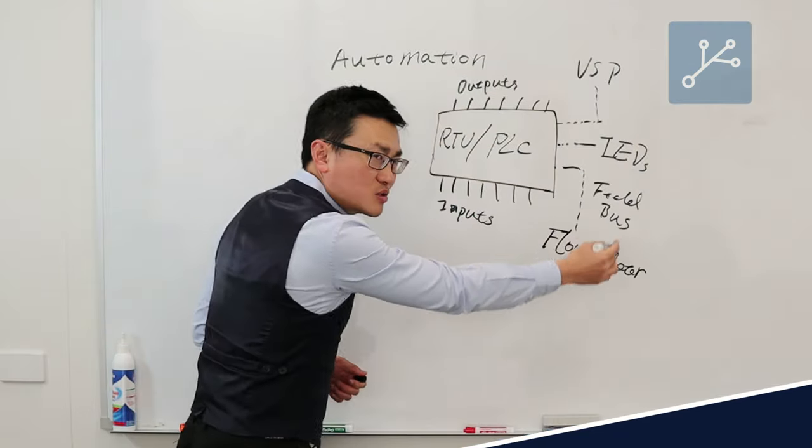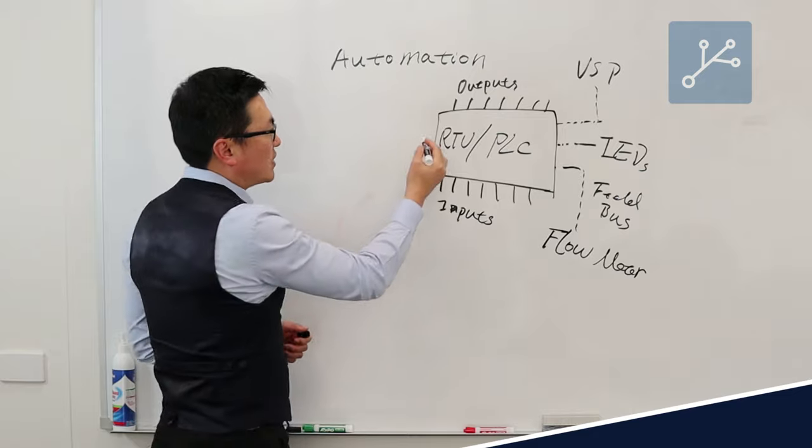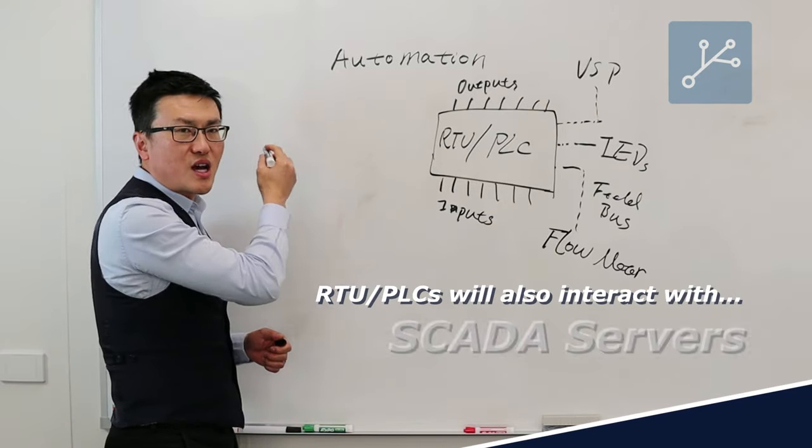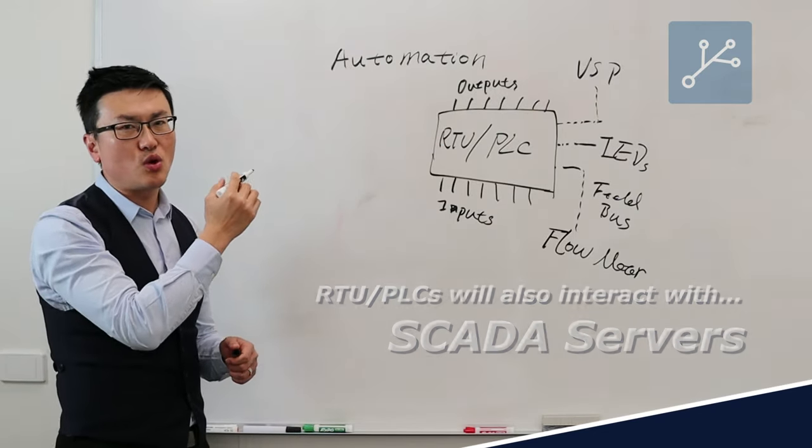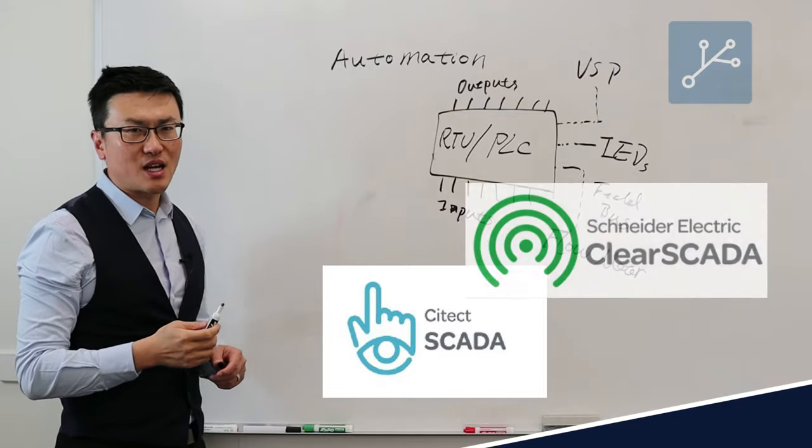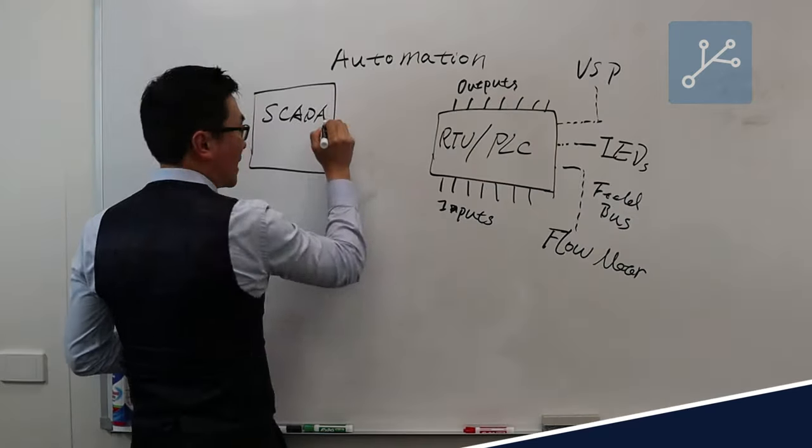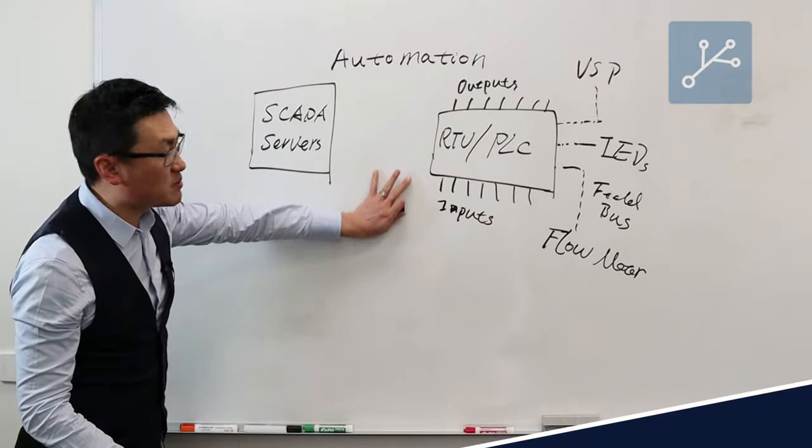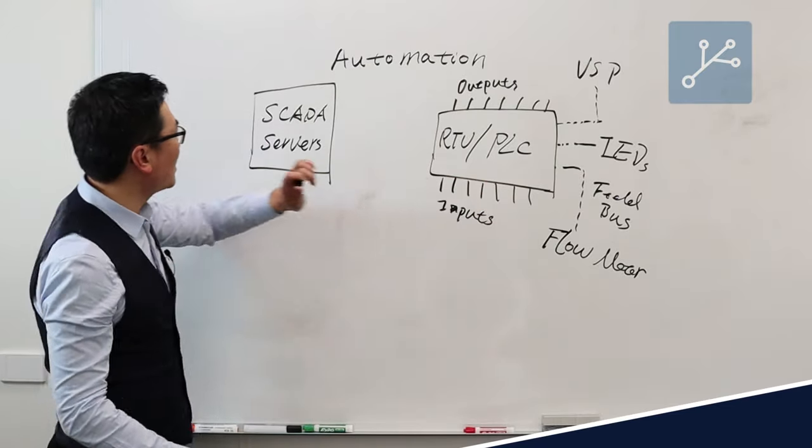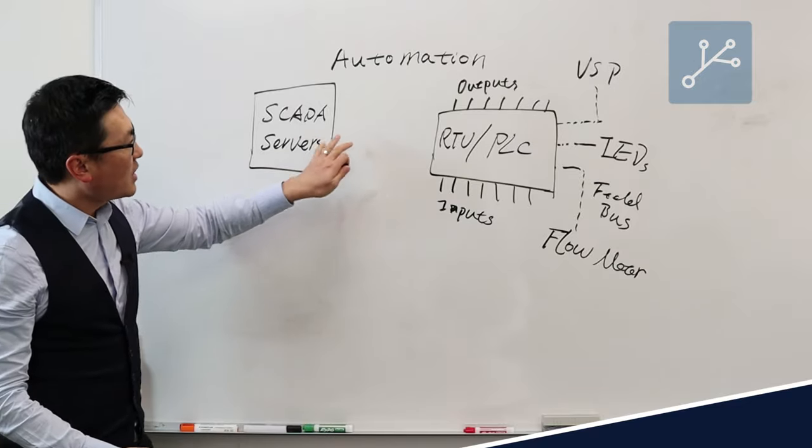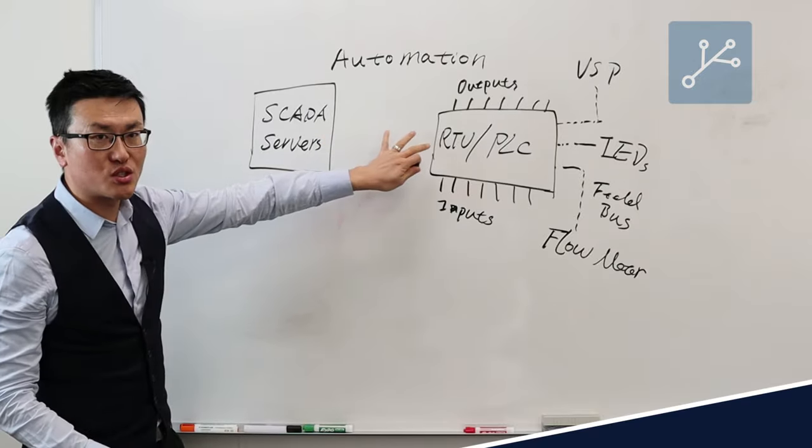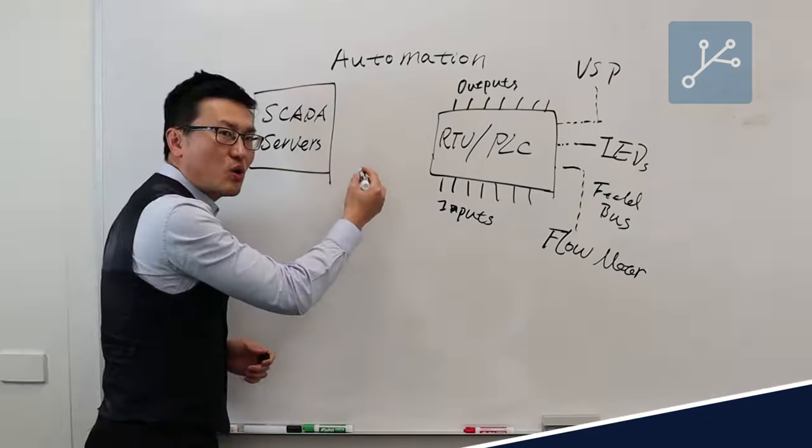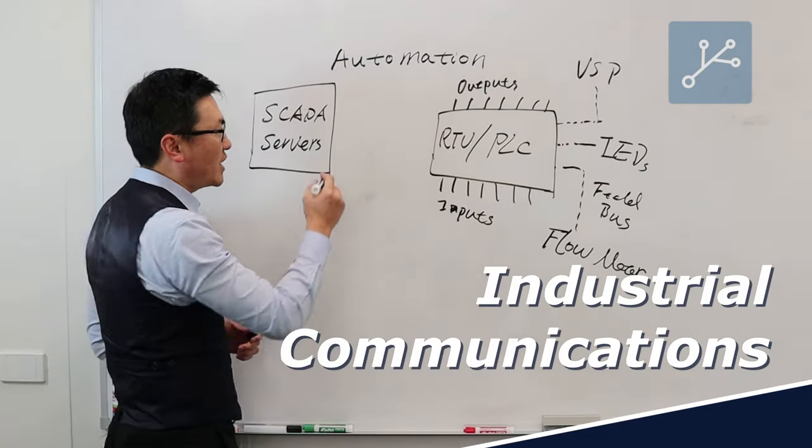Now from the control systems, it would interact with the SCADA server as we mentioned before—SciTech SCADA, Clear SCADA or any other SCADA platforms. You can see there is empty space between the RTU PLC and SCADA servers, and the linkage between these two components is called industrial communication.